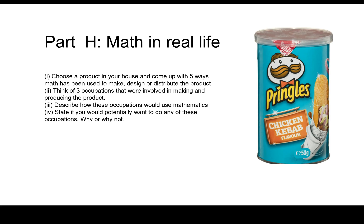Two: think of three occupations — so jobs — that were involved in making and producing the product. This could be like a chemist or a food scientist working out the ratio of ingredients, or it could be a graphic designer. Three: describe how these occupations would use mathematics.